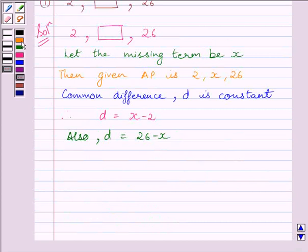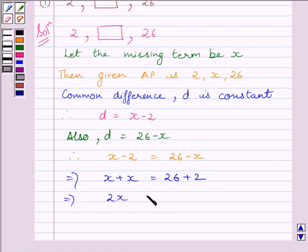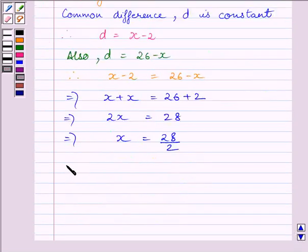So, we can write X minus 2 must be equal to 26 minus X. Now, this implies X plus X is equal to 26 plus 2. This implies 2X is equal to 28. This implies X is equal to 28 upon 2. This implies X is equal to 14.